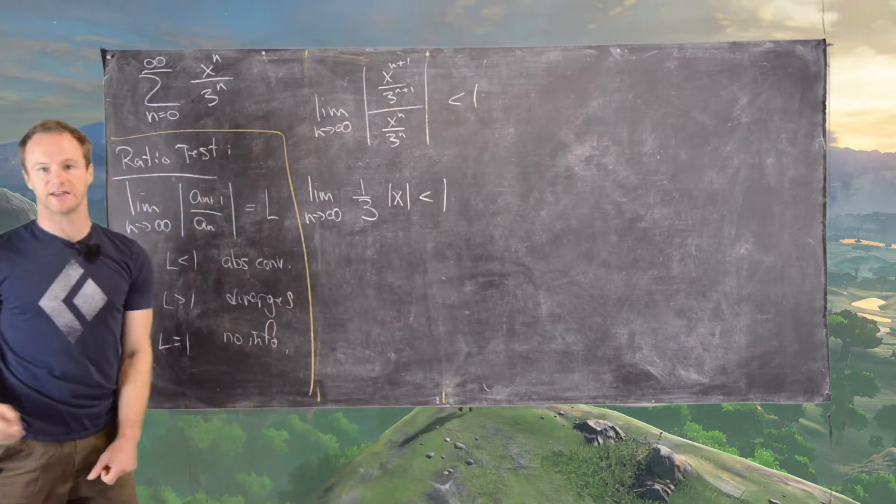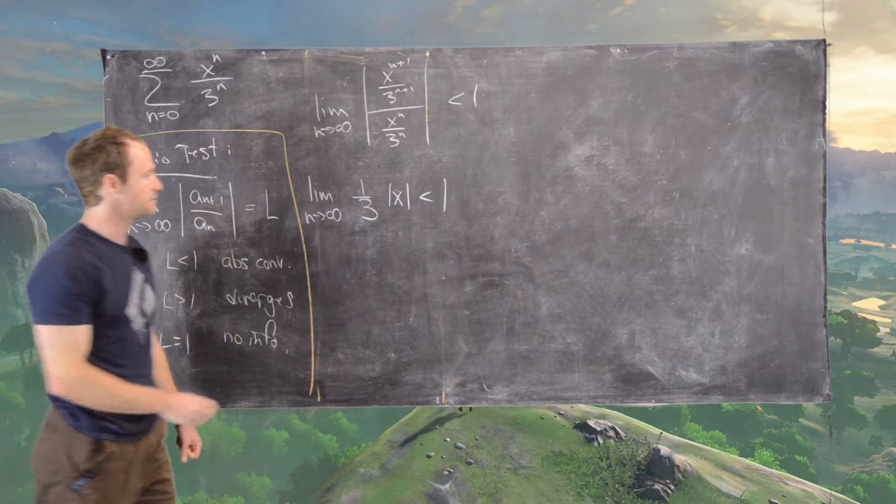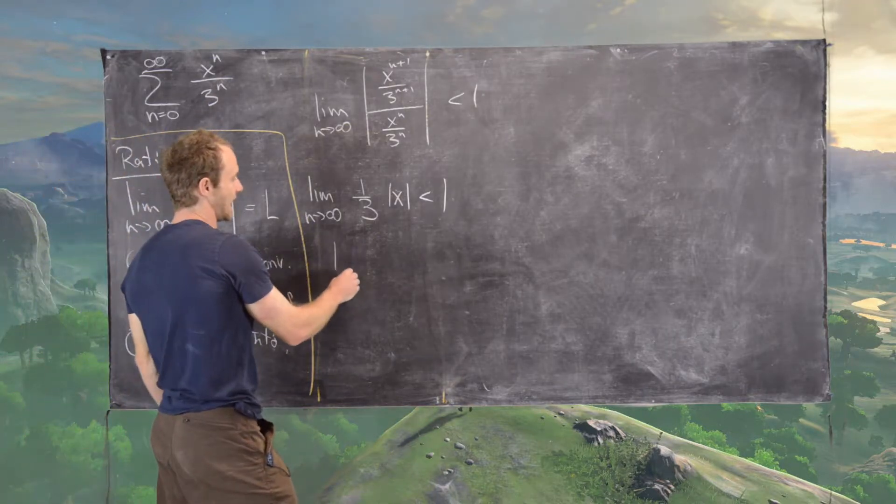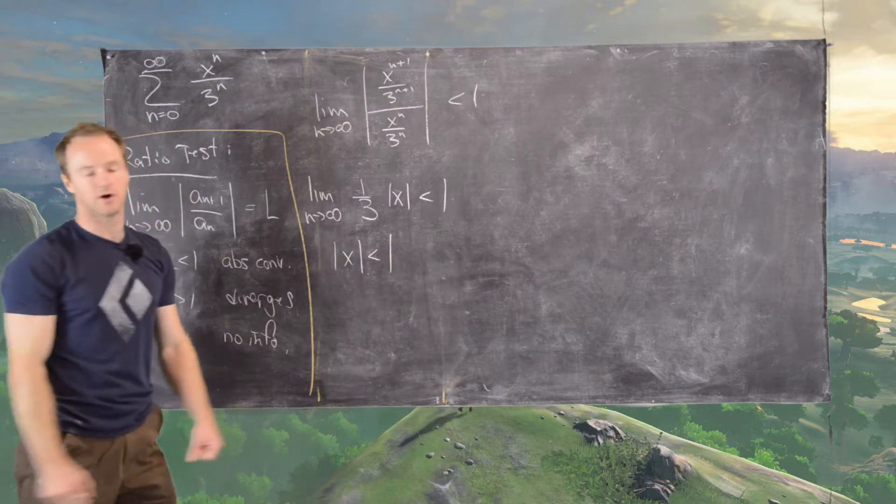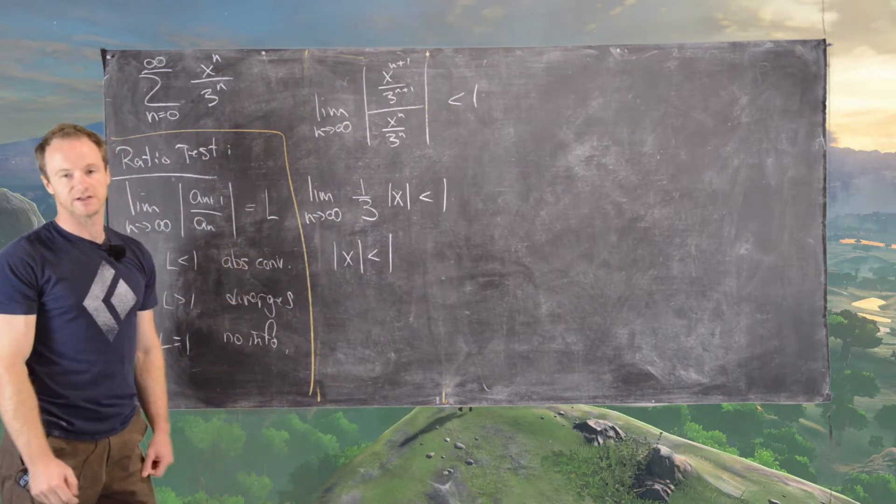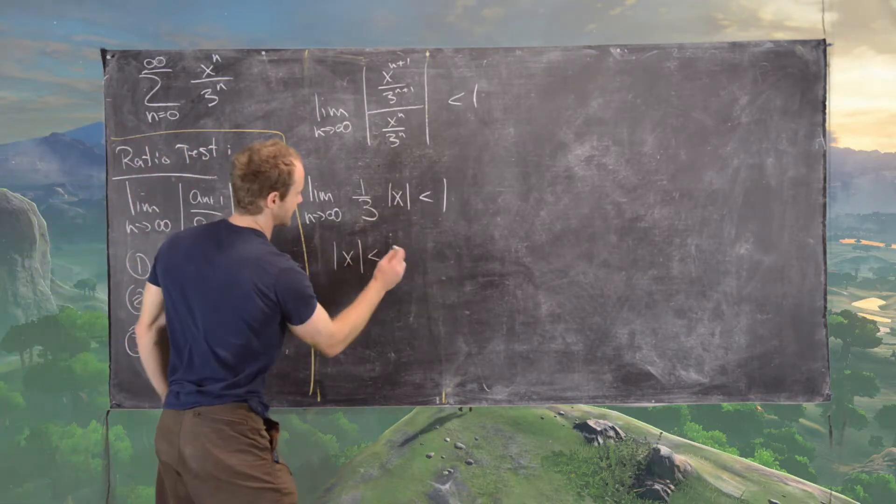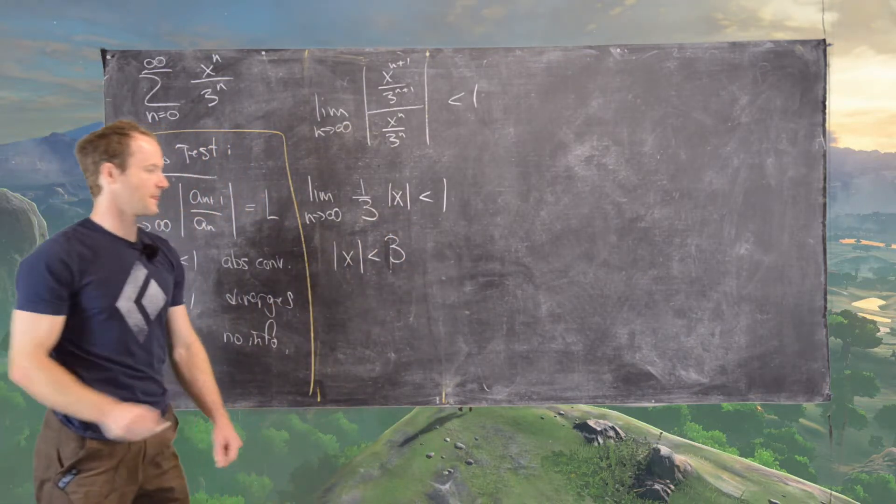So we have 1 third times the absolute value of x is less than 1. So that tells us that the absolute value of x has to be less than 3. Notice there are no n's left in this, so the limit is super simple. So, sorry, this should be 3.